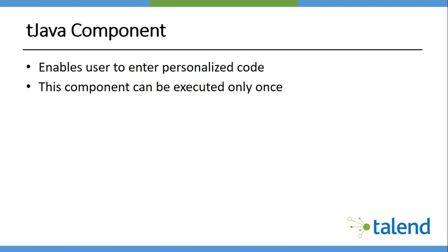The first component is the tJava component. This is used to enter personalized code and is basically a standalone component — it can sit at the start, in the center, or at the end of the process flow of the integration job. Usually, we do not pass any data to this component; it does not accept any data from a preceding or following component. It's simply a standalone component.